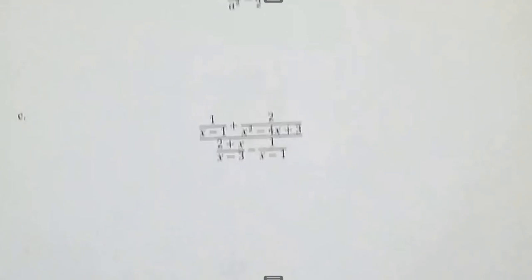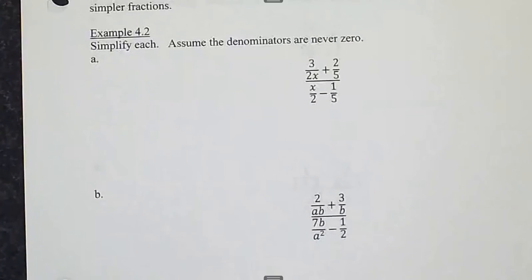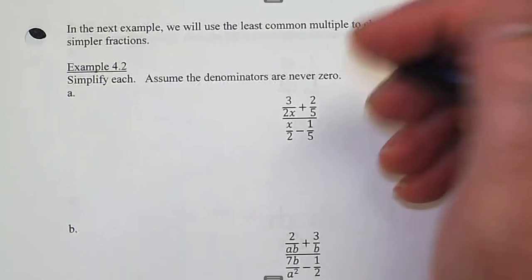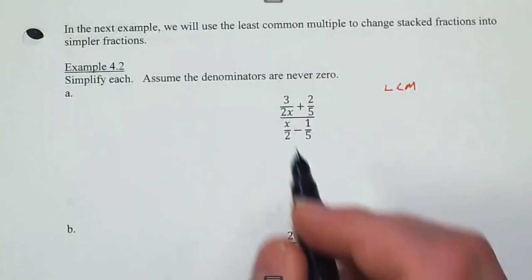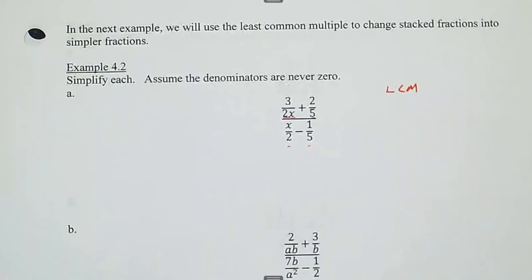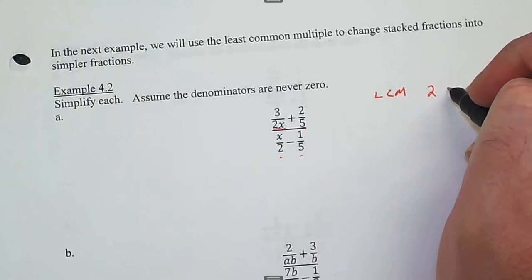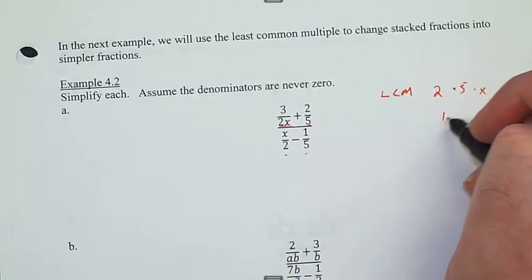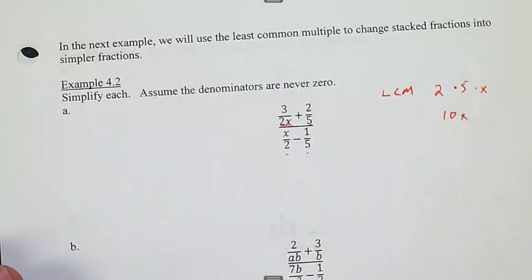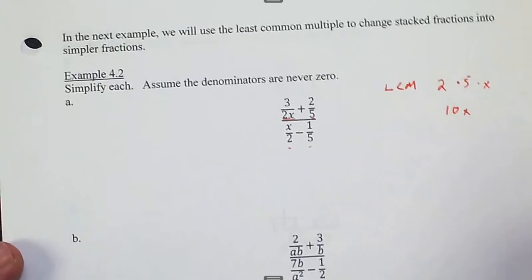Now that you're comfortable finding the LCM, it's time to use it. We're going to simplify stacked fractions — fractions within fractions — turning them into a single fraction. What we do is find the LCM of all the denominators. Looking at the four denominators here, they're basically factored for us; the bases that occur are 2, 5, and x, so the LCM is 10x.